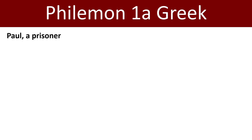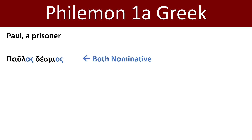Let's look at the first half of that: Paul, a prisoner. The Greek words behind that phrase are Paulos desmios. I'm using the Erasmian system of pronunciation. You can see I've highlighted the case endings — they're both nominative, meaning Paul is the subject of the sentence which is going to follow.